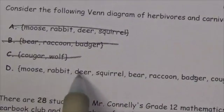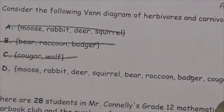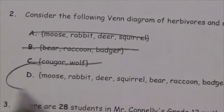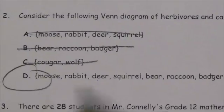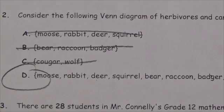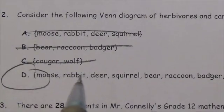One, two, three, four, five, six, seven, eight, nine — that's the one. It's got to be D. And it's true: if you look at all those, you've got all the animals represented in this particular set.